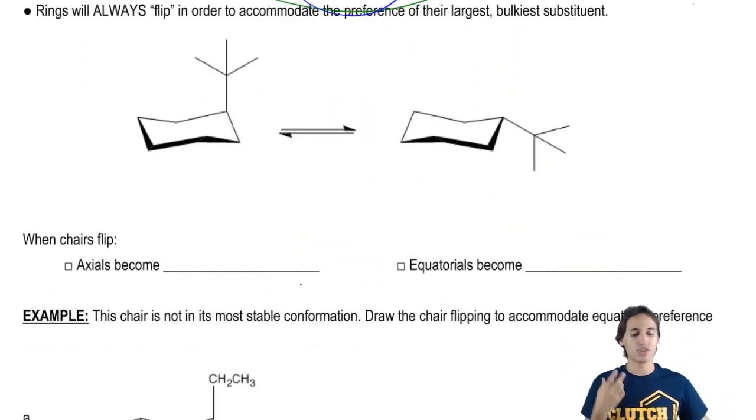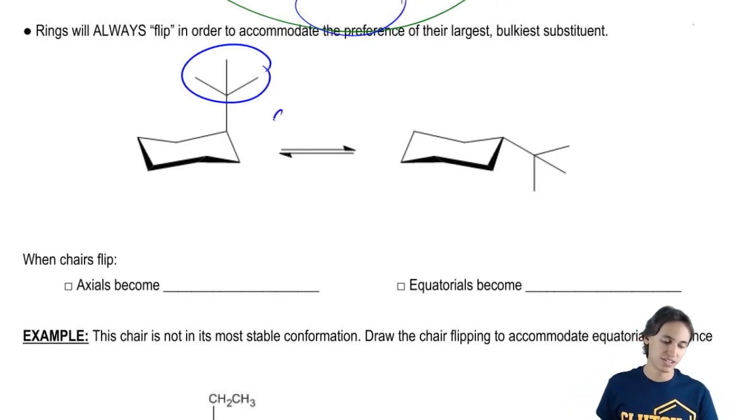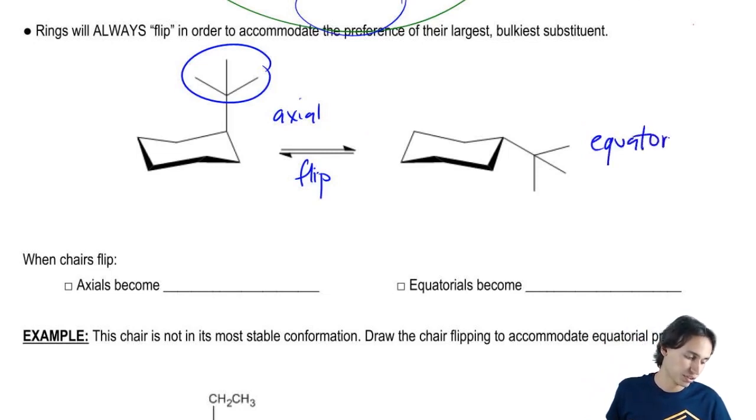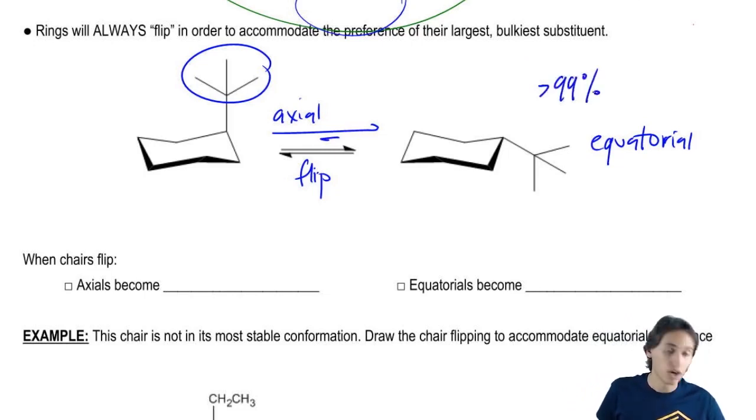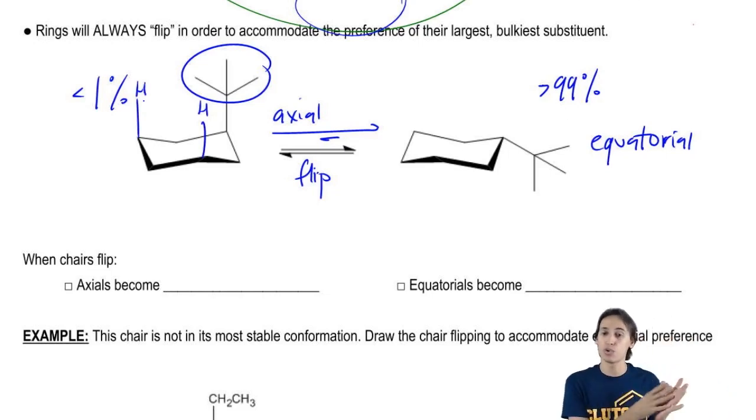So the ring is always going to flip in order to accommodate the preference of the largest substituent. In this case, I have a tert-butyl group. That tert-butyl group can be on two different chairs – one with it in the axial position. But any time you flip a chair, you wind up flipping positions. So if you flip your chair, this becomes equatorial over here. It goes from axial to equatorial. Which is going to be the most stable? It turns out it's going to be way more stable in the equatorial position. In fact, over 99% of this compound is going to exist in the equatorial position and less than 1% in the axial position. Why? Because the axial is so much more torsionally strained with these hydrogens here. They're just bumping into each other, whereas the equatorial position is way better.